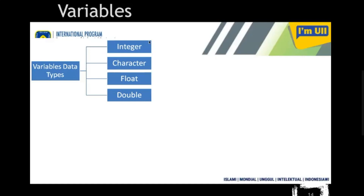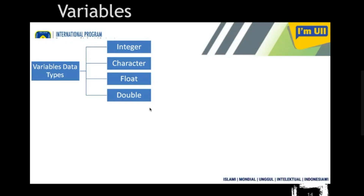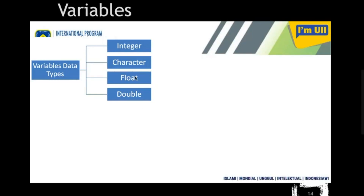Another way to classify variables is based on the size of the value — whether it is a small value or a large value. For example, float and double store the same type of value but float has a specific range and double has a larger range. This is not fixed across all programming languages — different programming languages in computer science have different variable type names.